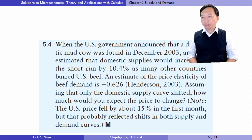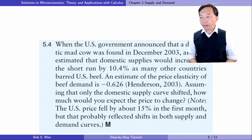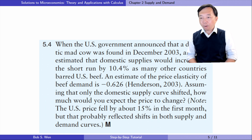Let's do exercise 5.4. When the US government announced that a domestic mad cow was found in December 2003, analysts estimated that domestic supplies would increase in the short run by 10.4% as many other countries barred US beef. An estimate of the price elasticity of beef demand is minus 0.626. Assuming that only the domestic supply curve shifted, how much would you expect the price to change?